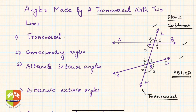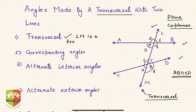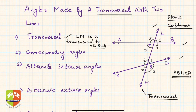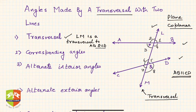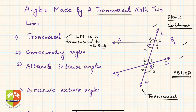LM is a transversal to AB and CD. Now, what are corresponding angles? Corresponding angles are angles on the same side of the two lines made by the transversal — that is, angles made by the transversal on the same side of both lines.